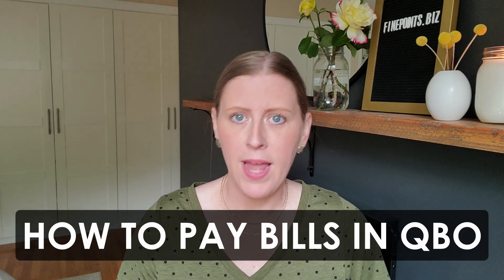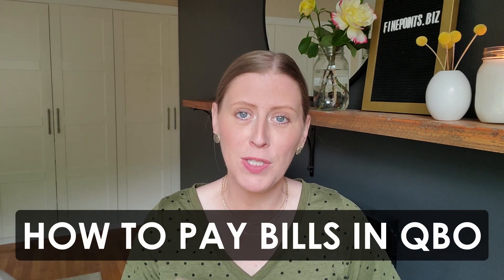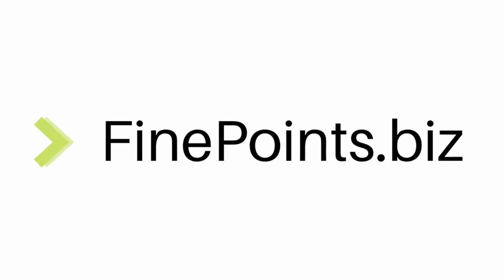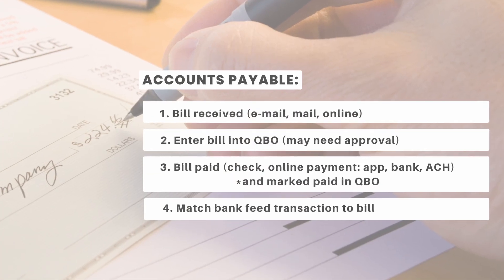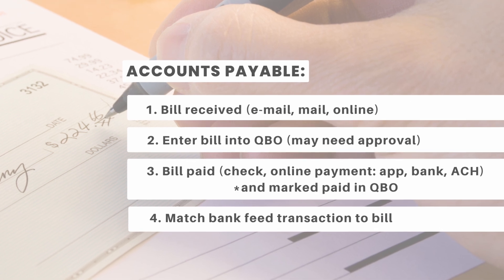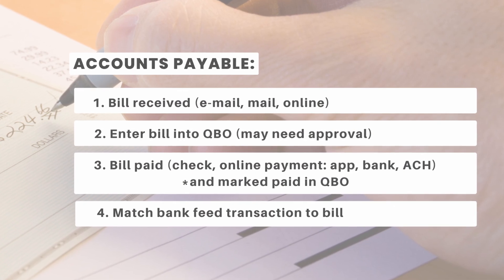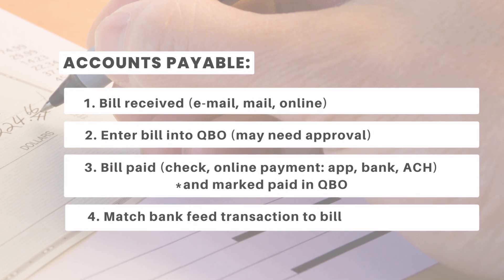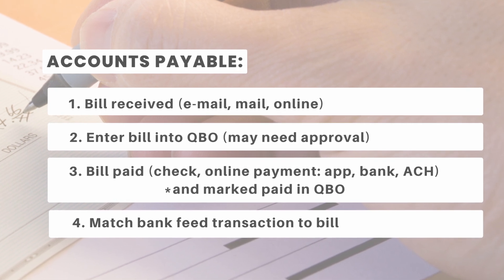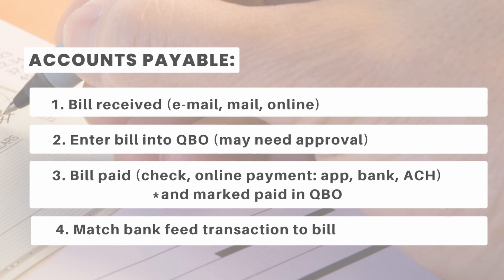Today we're going to talk all about accounts payable and how to practically pay bills for your clients as a bookkeeper. I have this four-step process and I'm going to go through each one of these four steps. I will have chapter titles so you can skip around if there are certain things you're looking for. The first step is you receive the bill, then you enter it into QuickBooks, then you pay the bill — there's a variety of ways — and then you match it within the bank feeds in QuickBooks.